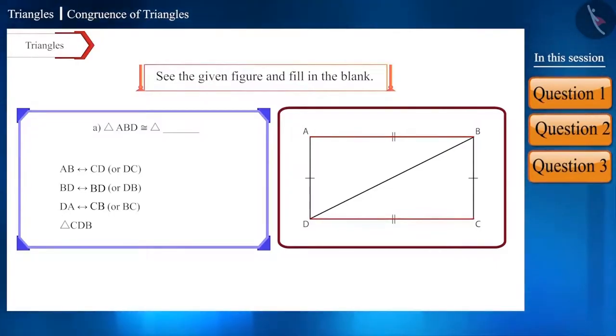Similarly, moving forward in the same order, BD will be congruent to BD or it can also be called DB and DA will be congruent to CB or BC. Similarly, we got the name of the second congruent triangle as triangle CDB.